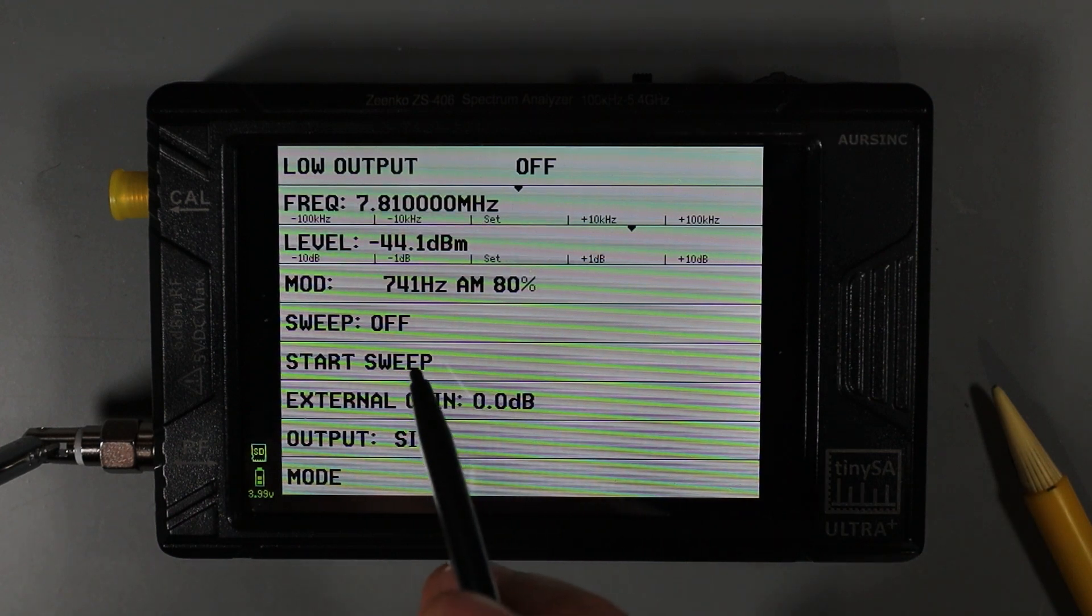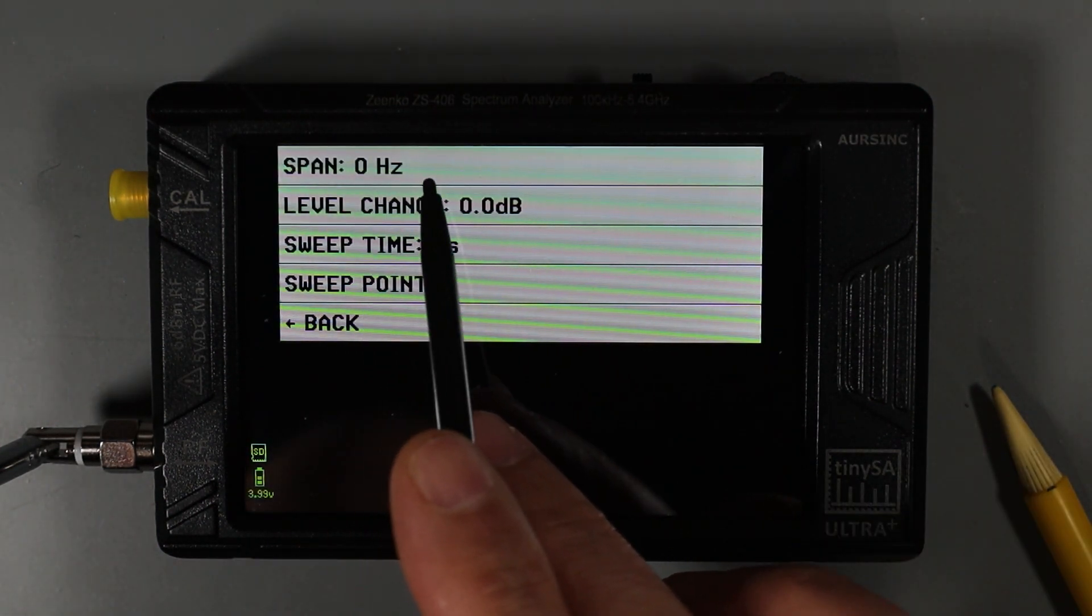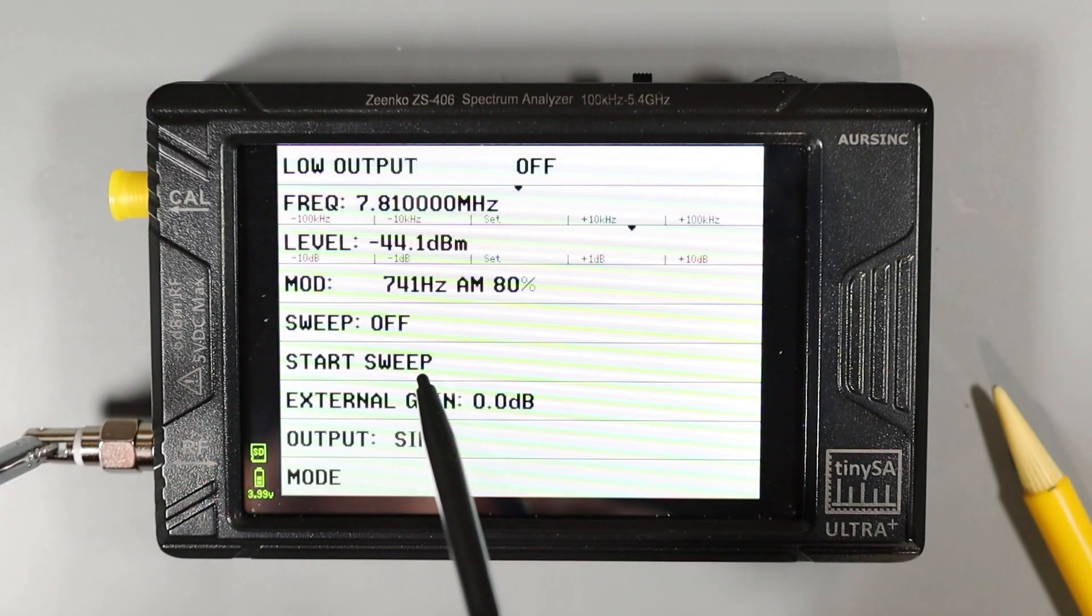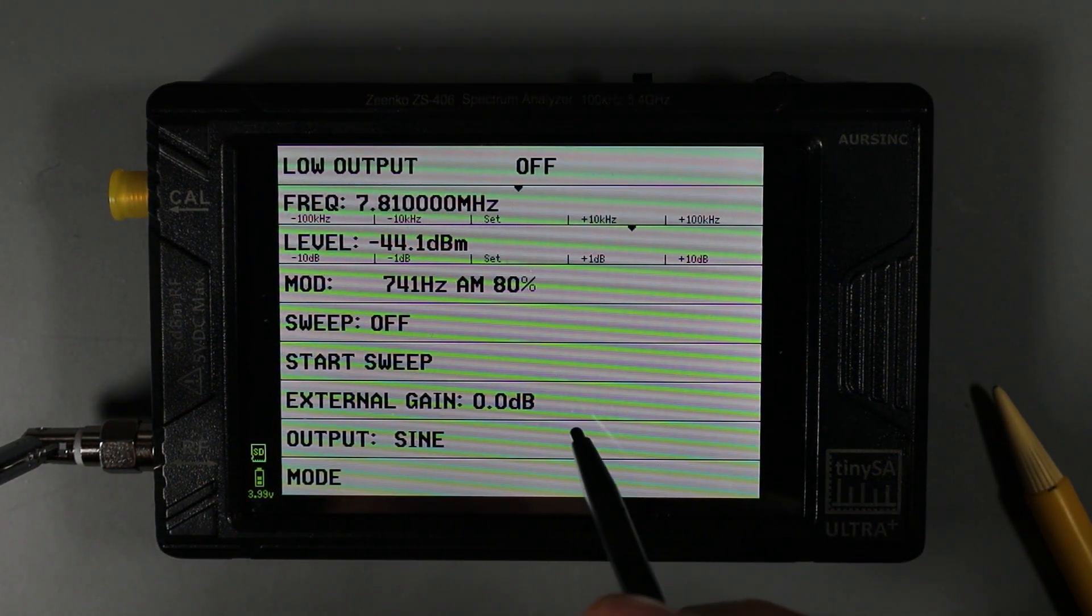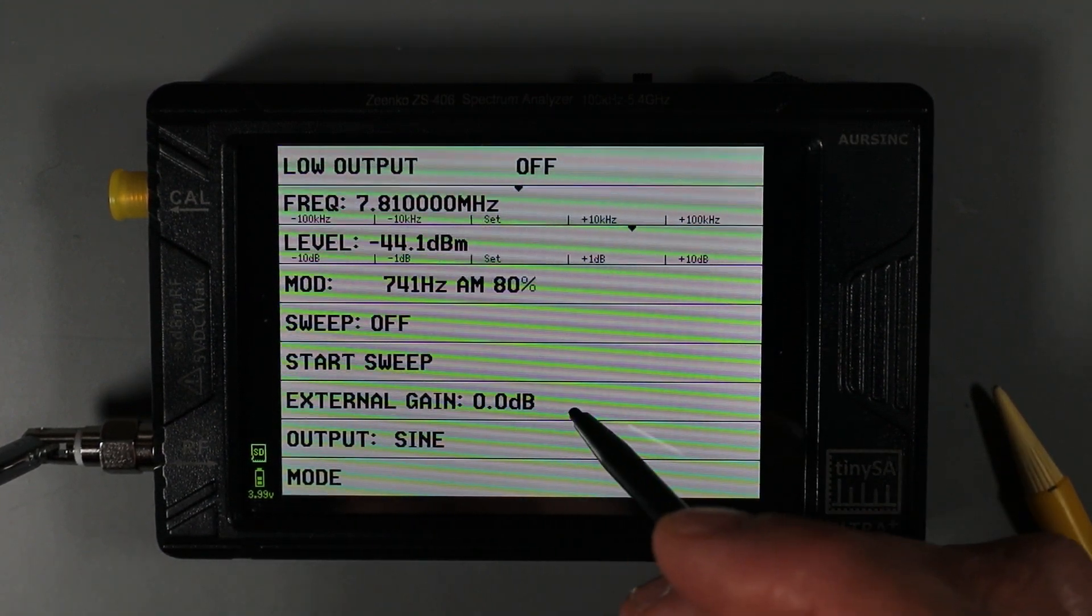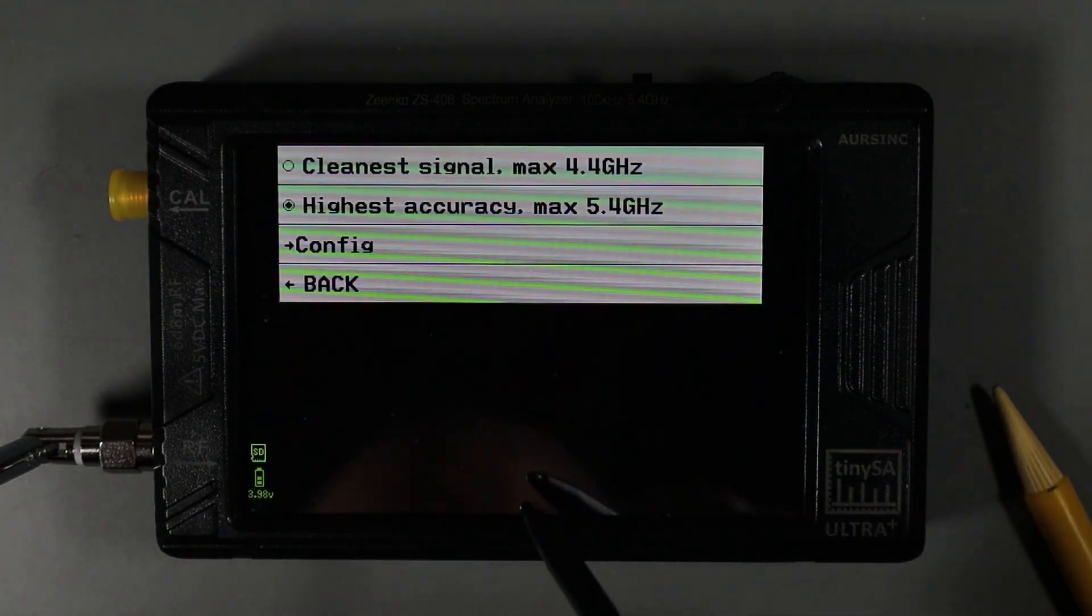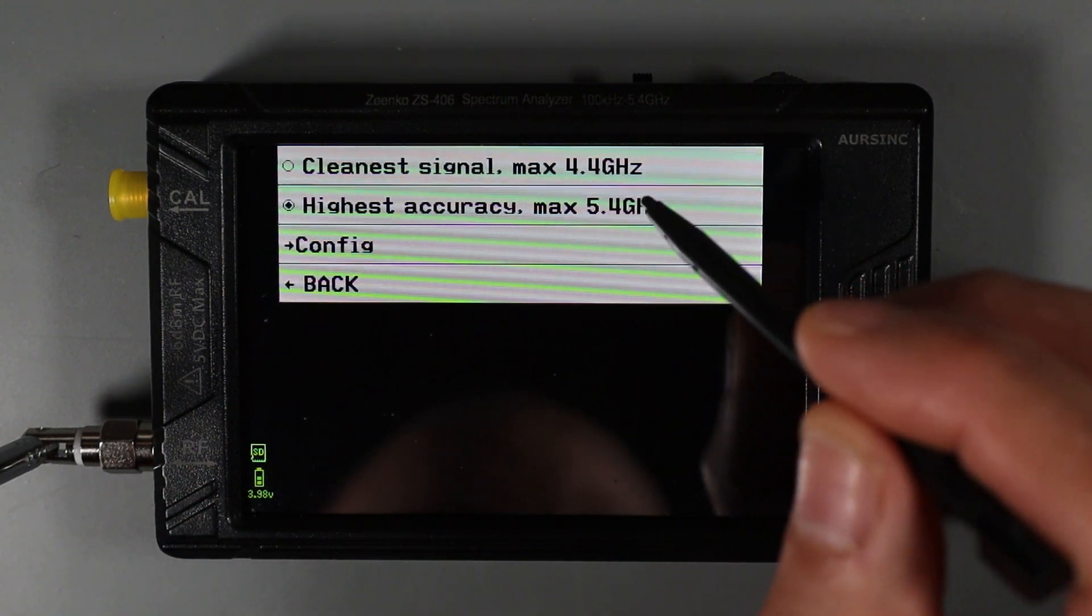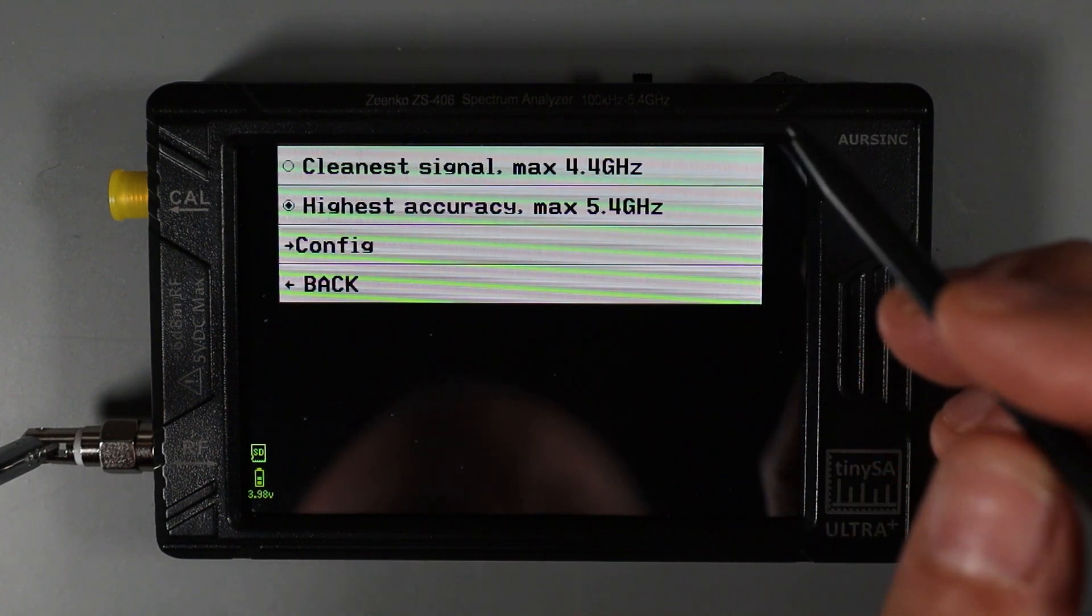The signal generator also offers a sweep function, and we can set the options for that in this field. You can see we can set the sweep span, the level, the sweep time, and sweep points. And then this field turns the sweep on and off. This field allows us to set an external gain value similar to the way we did in spectrum analyzer mode when we had the attenuator set up. You can just go in here and type in a value. And then the last option here lets us configure the wave type. We can choose between a cleaner signal, but max out at a 4.4 gigahertz frequency, or choose highest accuracy and max out at 5.4 gigahertz.